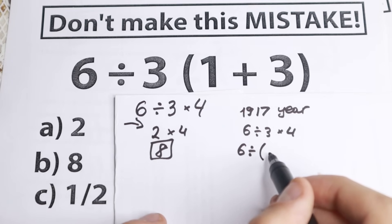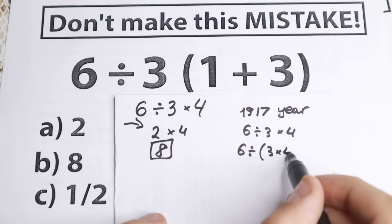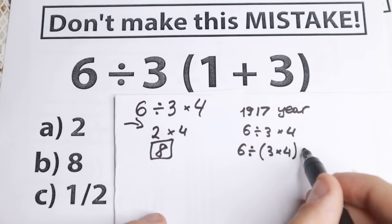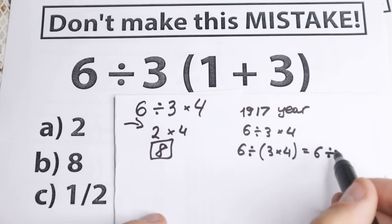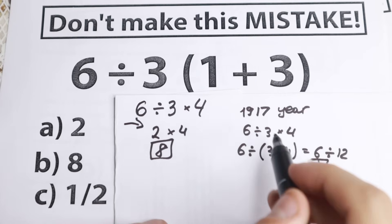In 1917, you would divide by the entire product. We take 3 times 4 in parentheses, and this equals 6 divided by (3 times 4) equals 6 divided by 12. As a result, we get one-half. This was the answer in 1917.